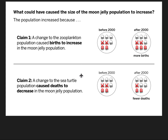In Claim 2, it says a change to the sea turtle population caused the deaths to decrease in the moon jelly population. You could imagine that with more sea turtles eating the moon jellies, more moon jellies would be dying. Before 2000, we have about the same number of deaths as births. But after 2000, we don't have as many deaths as births. Because there are fewer deaths, we're going to have a population increase. That's Claim 2 — it was caused by the sea turtles.